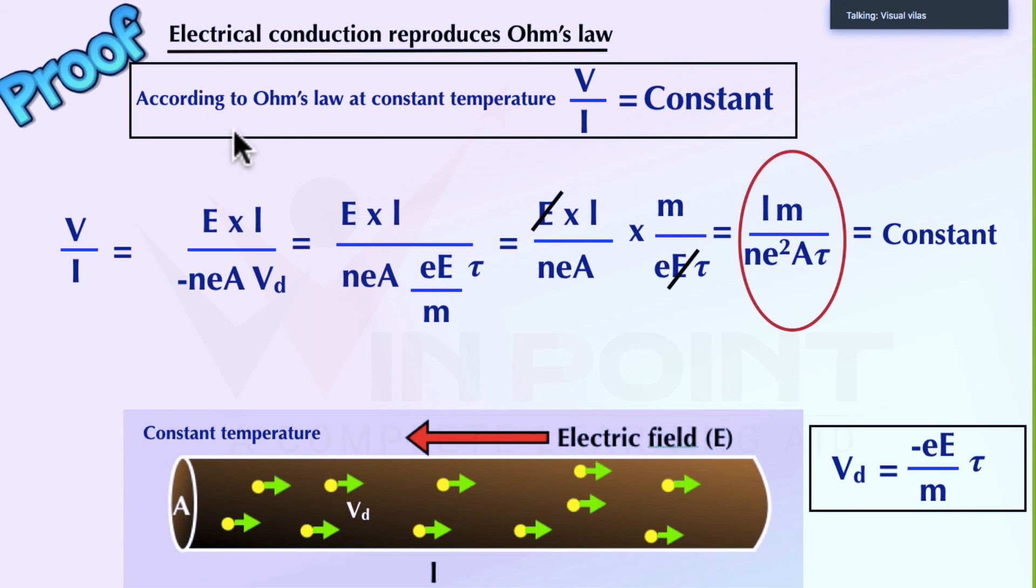According to Ohm's law, V by I equal to constant. We have applied all the equations we were discussing in electrical conduction. And we have applied all the equations which we are having. Then also we are getting a constant. So hence it proved Ohm's law reproducing in electrical conduction.